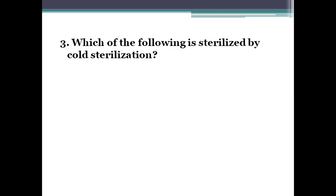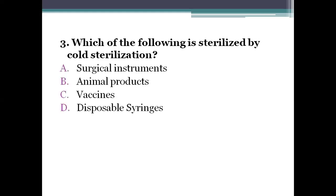Next question: which of the following is sterilized by cold sterilization? Option A, surgical instruments. Option B, animal products. Option C, vaccines. Option D, disposable syringes. The right answer is disposable syringes — they are sterilized by a method called cold sterilization.